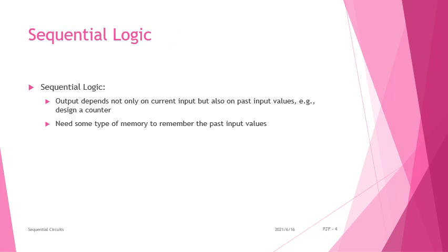Next, sequential logic. Sequential logic means that the output depends not only on the current input but also on past values. For example, if a signal changes from low to high, the output will also change, but at the same time the output considers past input values as well. If the present input changes from high to low while the past input changes from low to high, the output remains constant. So sequential logic depends on both past and present inputs.